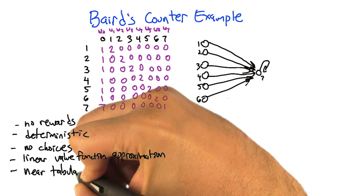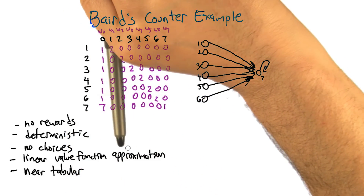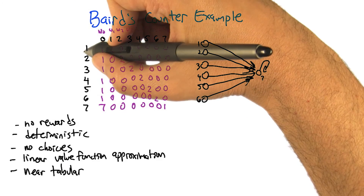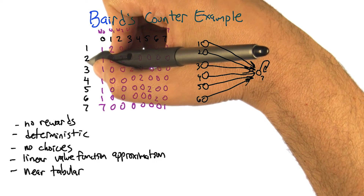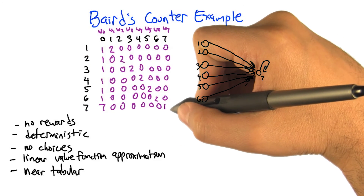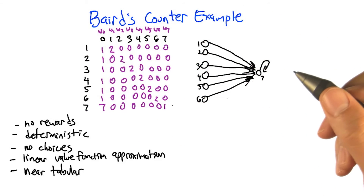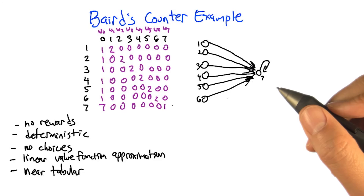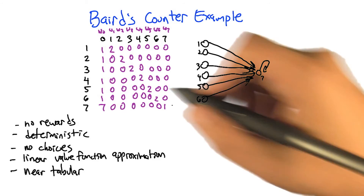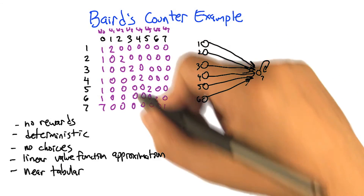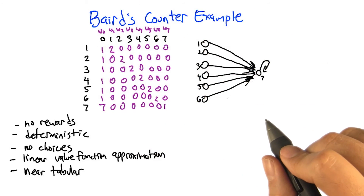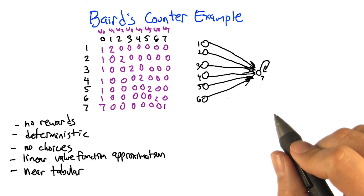I'd call this near-tabular, in the sense that if we get rid of this first feature, there's going to be one weight that represents the value for state 1, one weight for state 2, and so forth, and one weight for state 7. So it's exactly just a table — one weight or one table entry per state. All we've done is add a little bit by having this extra feature that we ought to be able to just ignore, and we should be able to represent things pretty well.